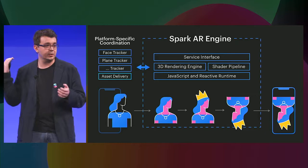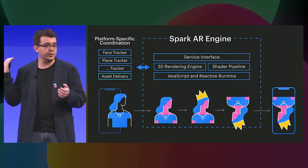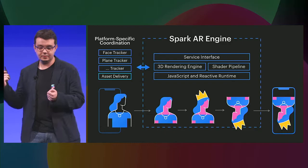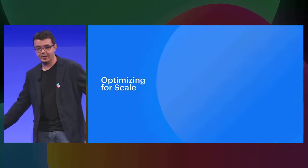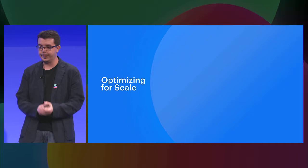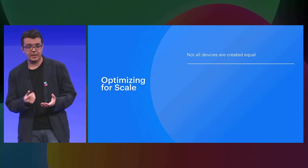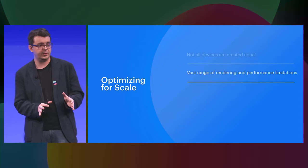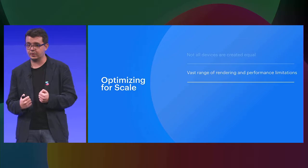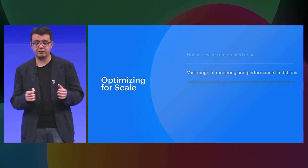Spark AR engine is cross-platform, running in studio and in player and on mobile and Portal. Let's talk about optimizing it for scale, which is really advanced and really hard. As we learned from Merlene, not all devices are created equal. This means that all of them have a vast set of rendering and performance capabilities and a vast range of limitations. What we need to do on the engine is tailor it so we can optimize for all of them without sacrificing the experience.